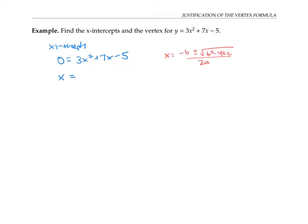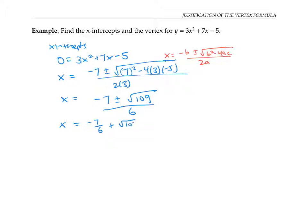So x is going to be negative 7 plus or minus the square root of 7 squared, minus 4 times 3 times negative 5, all over 2 times 3. That simplifies to negative 7 plus or minus the square root of 109 over 6. I could also write this as negative 7 over 6 plus the square root of 109 over 6, or x equals negative 7 over 6 minus the square root of 109 over 6.